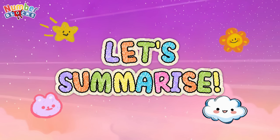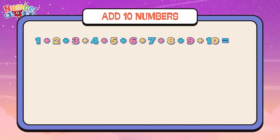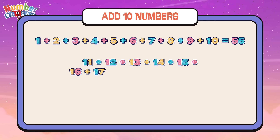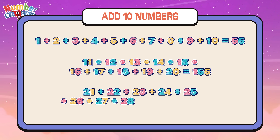Now join me and let's summarize. 1 plus 2 plus 3 plus 4 plus 5 plus 6 plus 7 plus 8 plus 9 plus 10 equals 55. 11 plus 12 plus 13 plus 14 plus 15 plus 16 plus 17 plus 18 plus 19 plus 20 equals 155. 21 plus 22 plus 23 plus 24 plus 25 plus 26 plus 27 plus 28 plus 29 plus 30 equals 255.